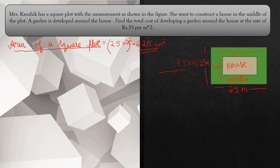Let's verify: 5 fives are 25, 5 twos are 10, carry 1 — that gives us 625. So area of square plot is 625 meter square.